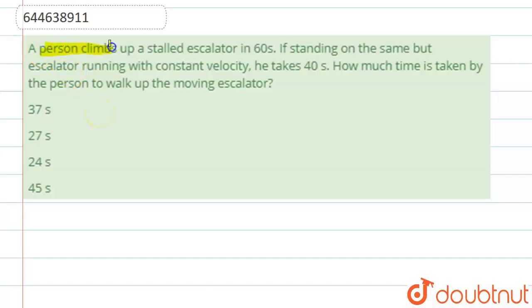A person climbs up a stalled escalator, meaning standing escalator, in 60 seconds. If standing on the same escalator but it's running with constant velocity, he takes 40 seconds. How much time will be taken by the person to walk up the moving escalator?